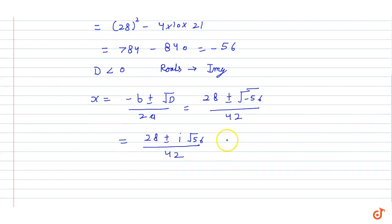First we will take 4 common. When we take 4 common, 2 will come outside and inside only 14 will remain. Then dividing by 2: 14 plus minus root 14 iota upon 21.